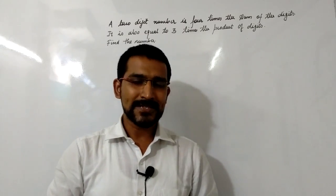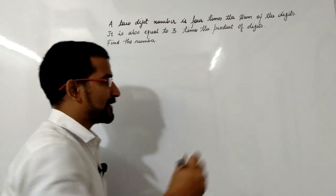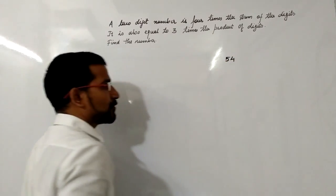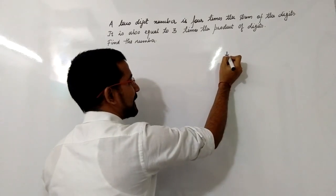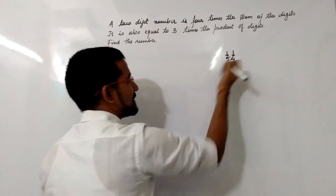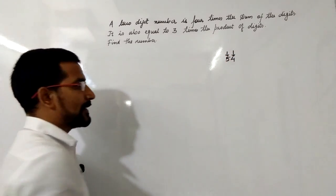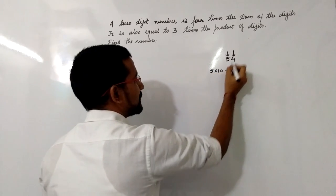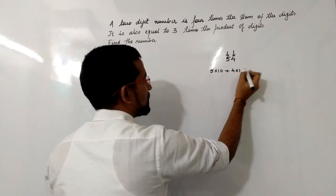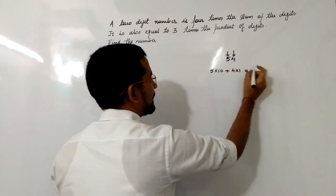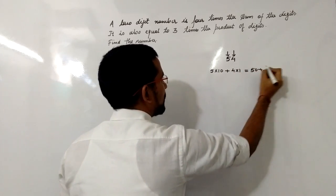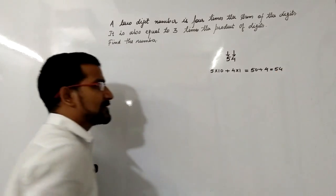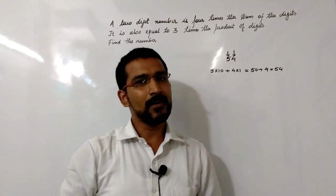As we know, in a two-digit number, for example if we take 54, the 5 is at the 10th place and 4 is at the unit place. So 5 will get multiplied by 10, plus 4 will get multiplied by 1. The number form is 5×10, that is 50, plus 4×1, that is 4, so it is 54. This is how two-digit numbers are formed.